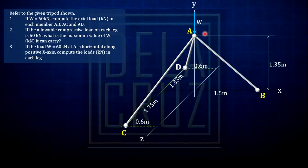So we are given the allowable compressive load in each leg and W is what we need to find. Let's solve number 1 first, then number 3.